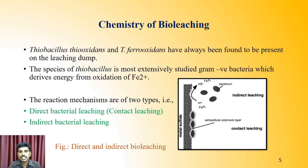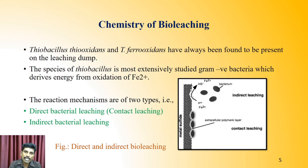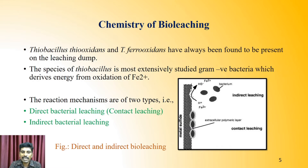Regarding the chemistry of bio leaching, Thiobacillus ferroxidans and Thiobacillus thiooxidans have always been found present in the leaching dump area. The species of Thiobacillus is most extensively studied. It is a gram-negative bacterium that derives energy from the oxidation process — specifically the oxidation of ferrous ions, which serves as the energy source for Thiobacillus growth. The reaction mechanisms are of two types: direct bacterial leaching and indirect bacterial leaching.